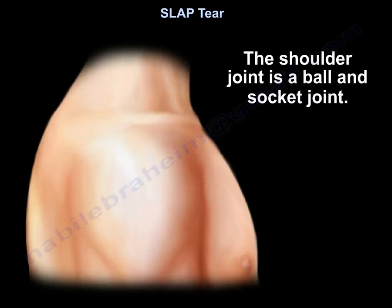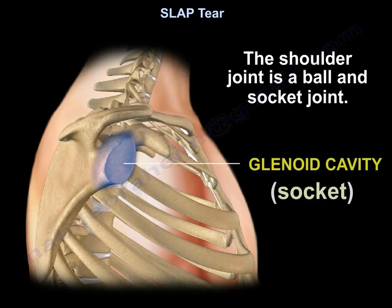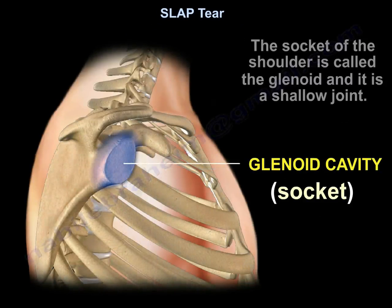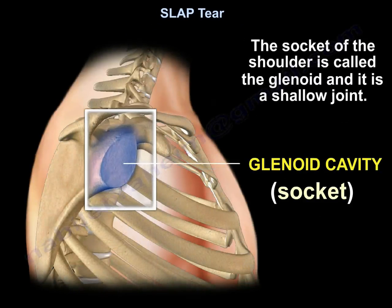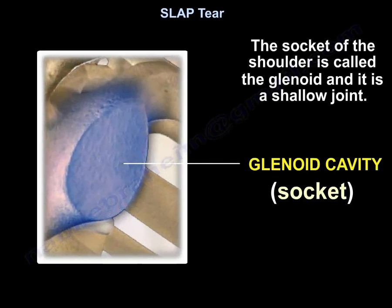SLAP tear. The shoulder joint is a ball and socket joint. The socket of the shoulder is called the glenoid. It is a shallow joint.